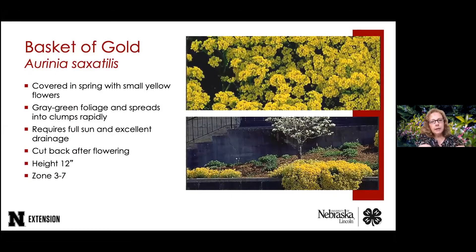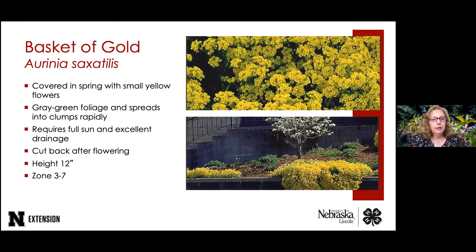Basket of gold is a great ground cover and early summer bloomer covered with beautiful little yellow flowers, reminiscent of alyssum but in yellow. The foliage is a gray-green color. This plant also needs really excellent drainage — you could almost plant it in a rock garden with sandy or gravelly soil. Both the artemisia we just looked at and basket of gold are good candidates for those challenging dry areas. It requires full sun and is not shade tolerant.